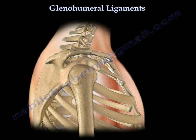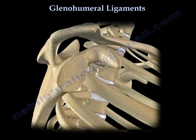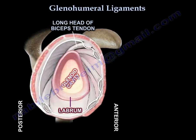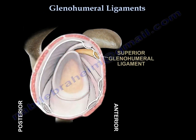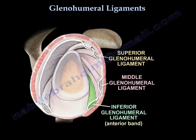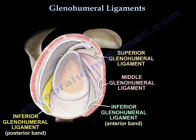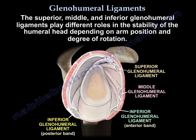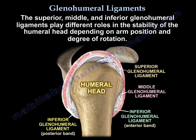The glenohumeral ligaments. There are three important glenohumeral ligaments: the superior glenohumeral ligament, the middle glenohumeral ligament, and the inferior glenohumeral ligament. The inferior ligament has two bands: the anterior band and the posterior band. The superior, middle, and inferior glenohumeral ligaments play different roles in the stability of the humeral head depending on the arm position and the degree of rotation.